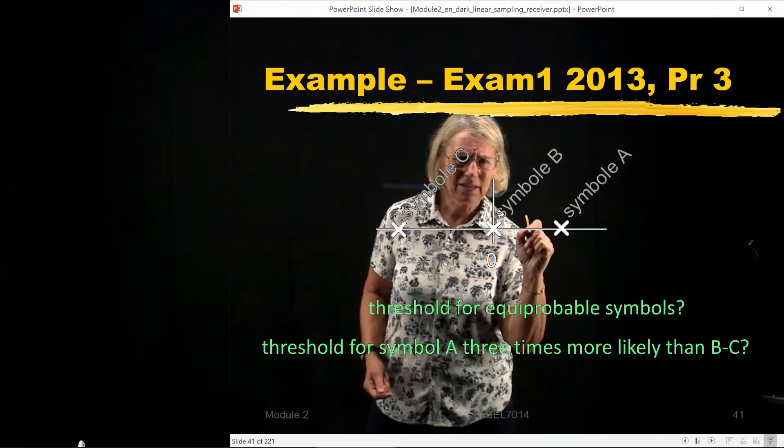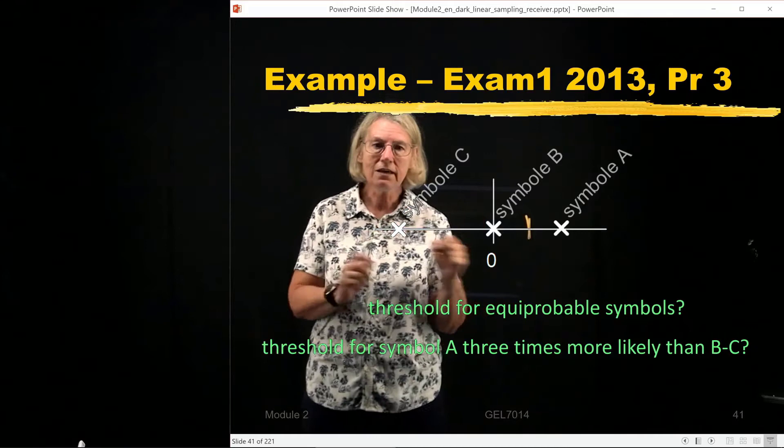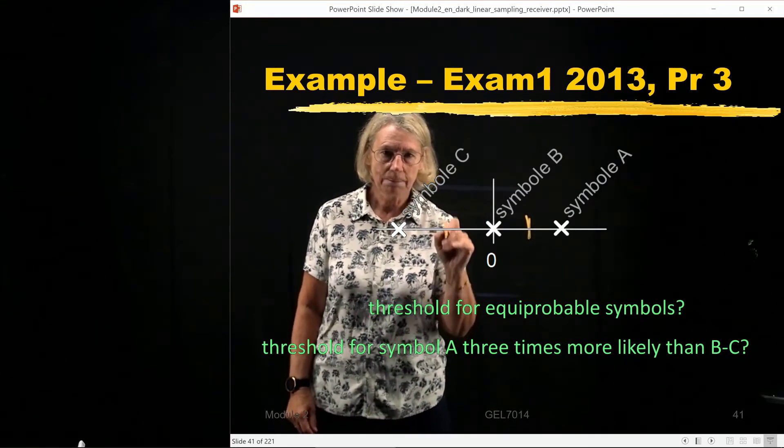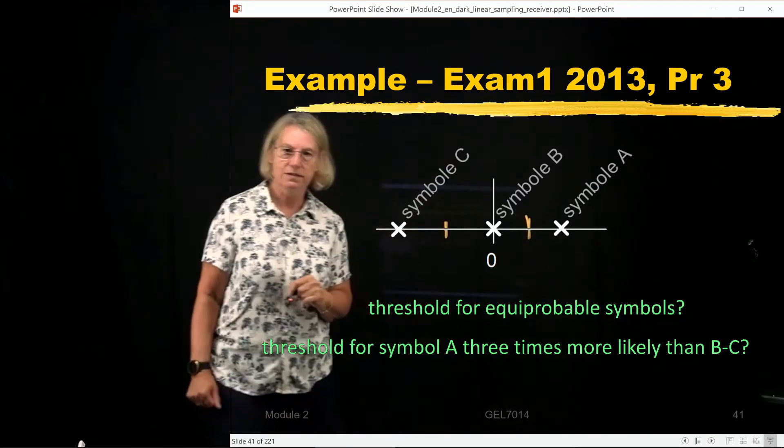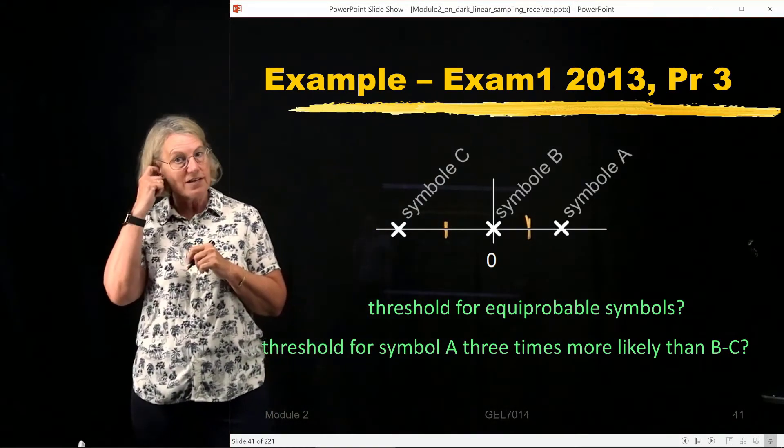So here would be like one threshold. And if I was going to choose between B and C, which would I choose? It would be here. So the midpoints are going to determine the thresholds for equiprobable symbols.